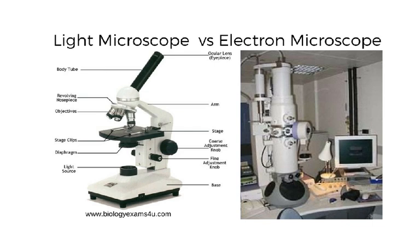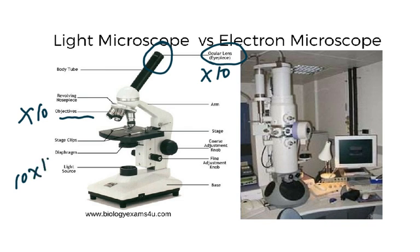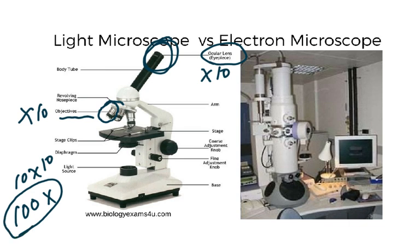If the objective lens is ×10 and the eyepiece also magnifies ×10, then the total magnification is 10 × 10 = 100 times magnified. The electron microscope magnifies to a much, much greater level — 15,000, 20,000, even 100,000 times.